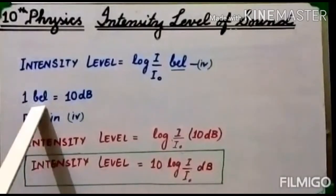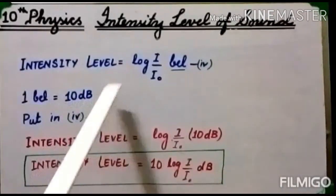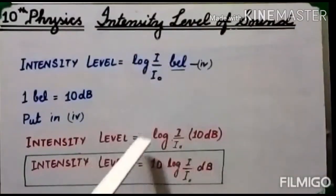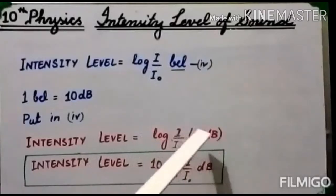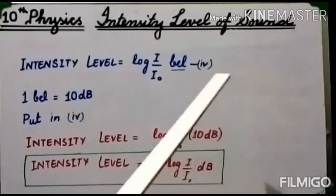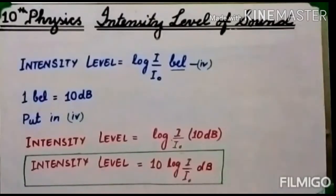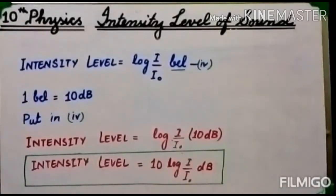1 bell is a very large physical quantity, so instead we use decibels: 1 bell = 10 decibels. Substituting, the final form of the intensity level formula becomes: intensity level = 10 log(I/I₀) dB. This formula is used in numericals and must be memorized. I₀ is the constant 10⁻¹² W/m². The scale constructed using these intensity levels is known as the decibel scale.